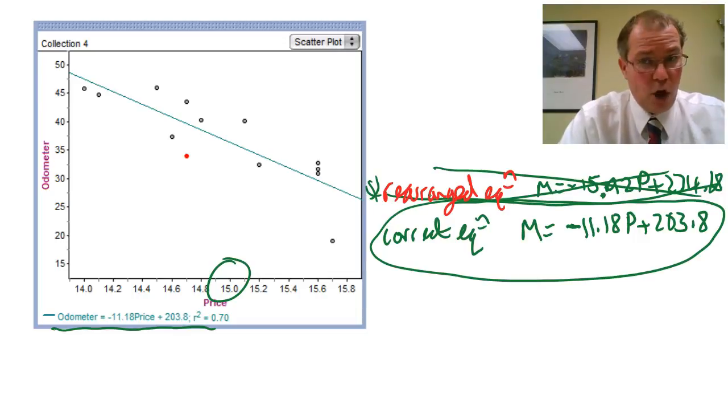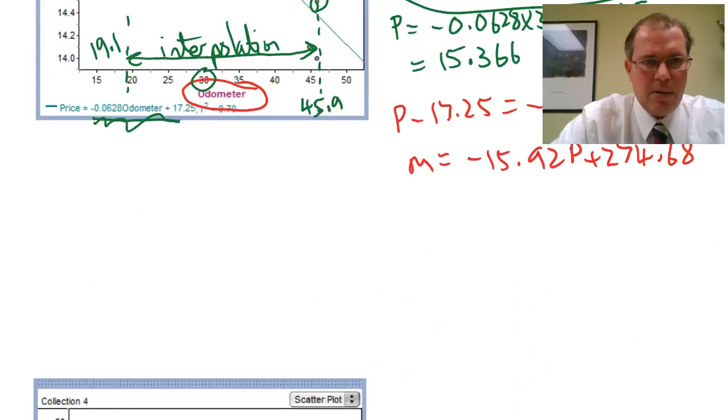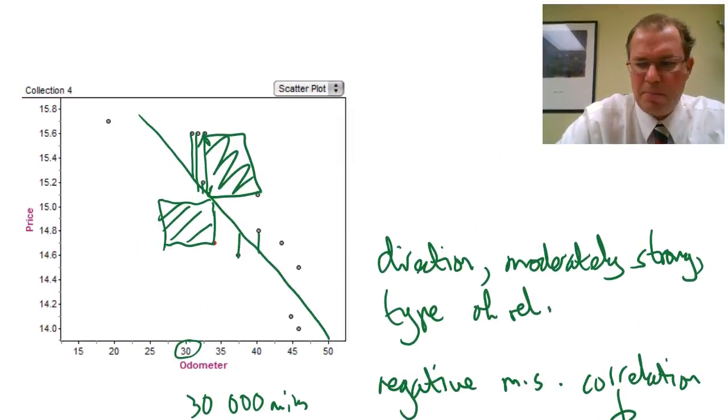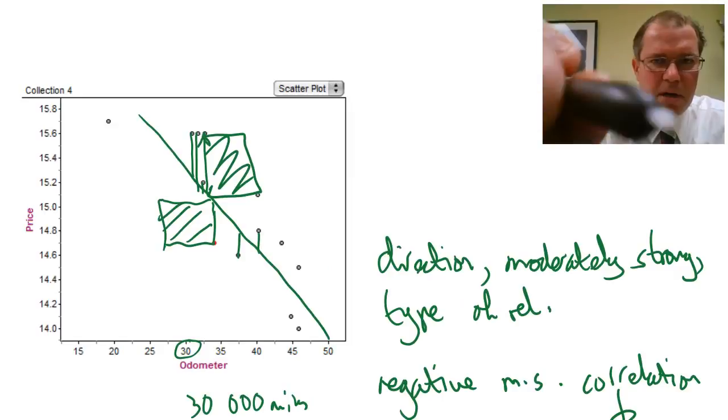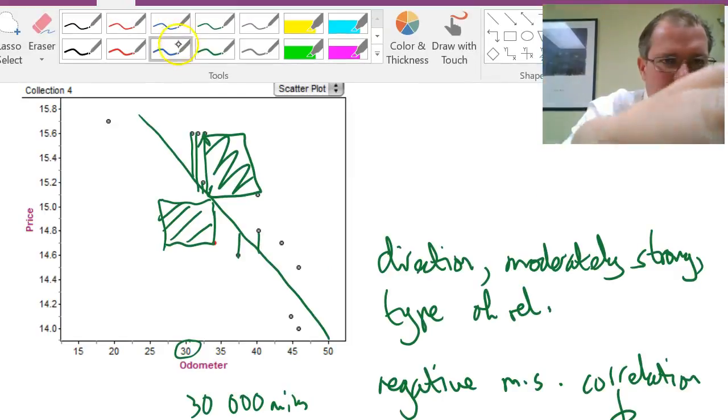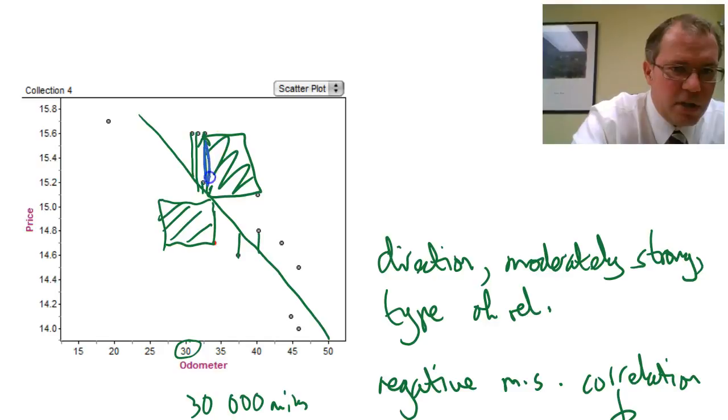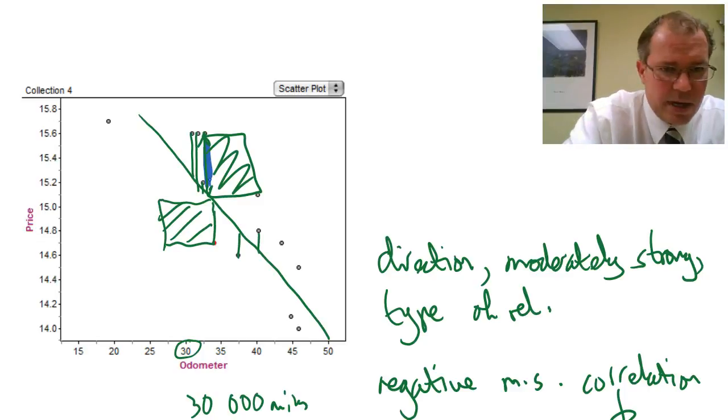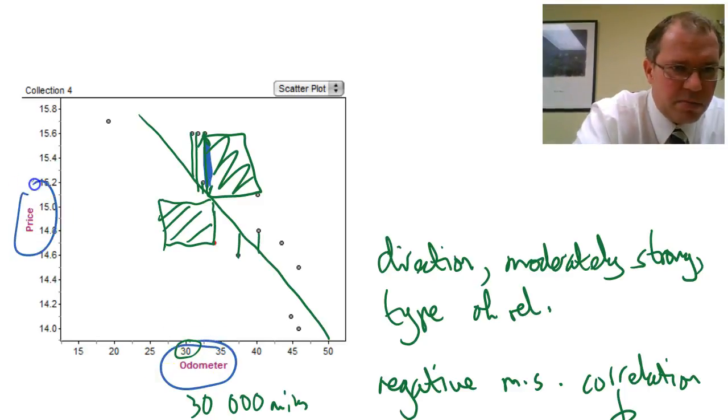Now, some of you, I hope, are thinking, why? Why hasn't it worked? And the answer lies in how we actually worked out our least squares line. So if we go back up here, remember that when I go back to the original one here, we found the vertical distance. And we made it a square. And we added up all of those squares and we minimised it. Now what happens to that vertical distance when I swap over odometer and price? That vertical distance is a price difference, isn't it?